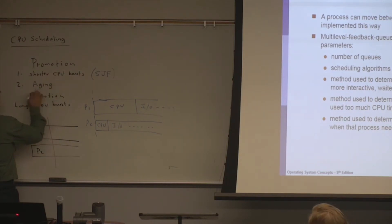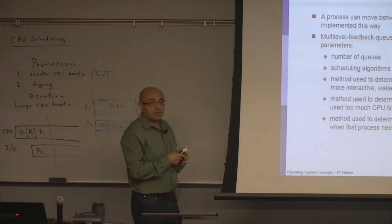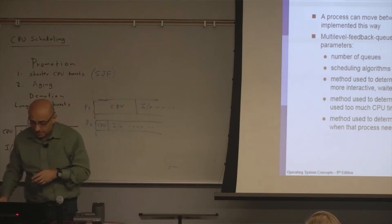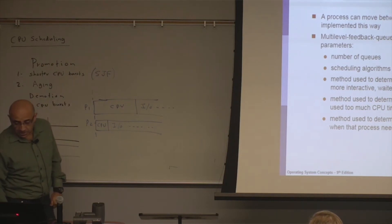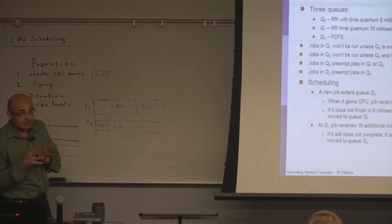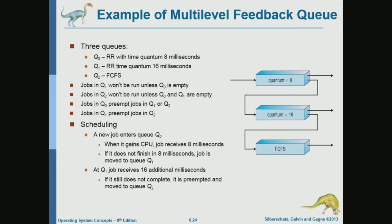This is very much what real operating systems do. Here is a specific example with three levels of priority: Q0 uses round robin with a time quantum of 8 milliseconds, Q1 uses round robin with a time quantum of 16 milliseconds, and Q2 uses first come first serve.